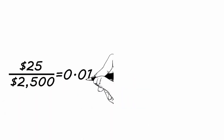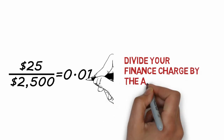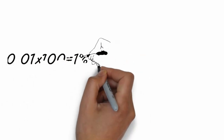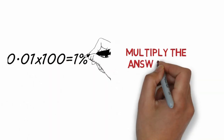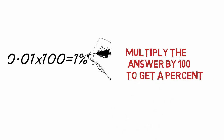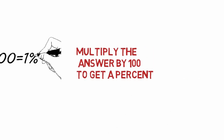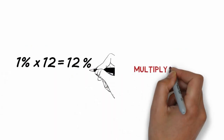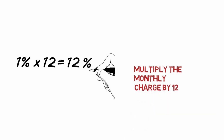Divide your finance charge by the amount owed — the finance charge is leveraged against you depending on your total debt. Multiply the answer by 100 to get a percent; this is your finance charge or interest charged monthly. Then multiply the monthly charge by 12. The answer is your annual interest percentage rate, also known as APR. You can do this with every single bill if you have a variable APR, meaning your bank has the ability to change your interest rates on the fly.